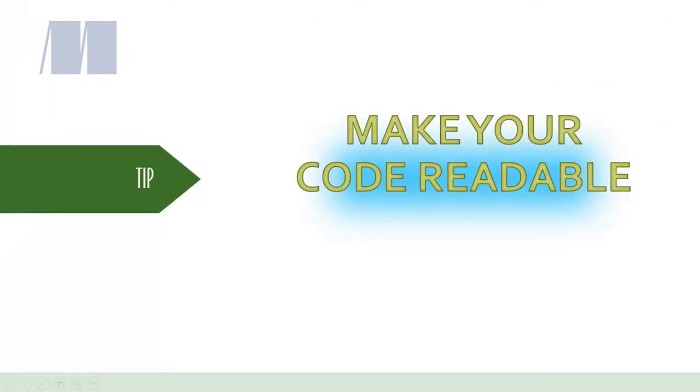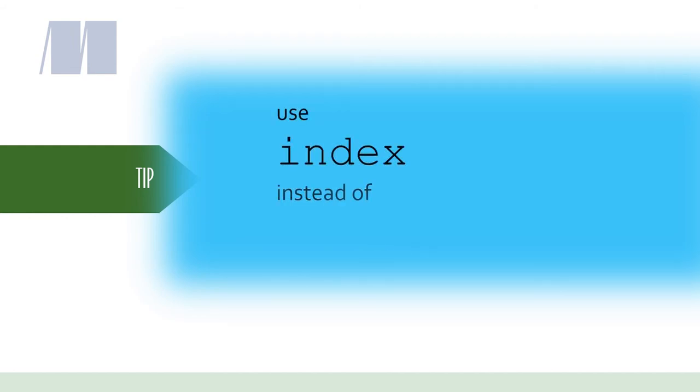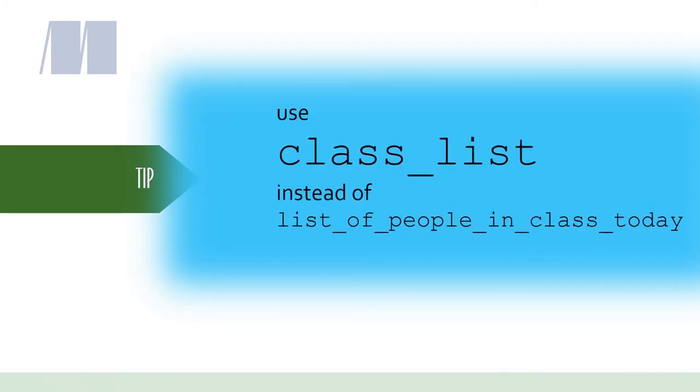A quick tip to make your code more readable. When you're deciding what names to use for variables, choose descriptive and meaningful names instead of short single character names. Use underscores to add pretend spaces between variable words. Don't use variable names that are too long. And be consistent throughout your code.